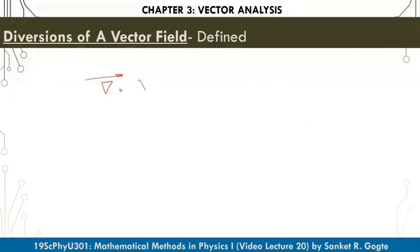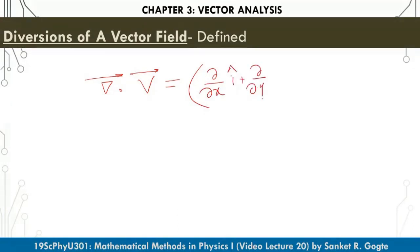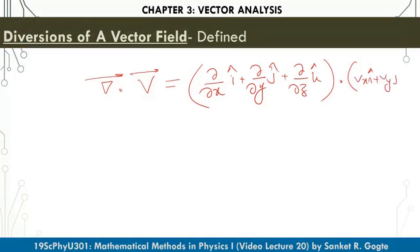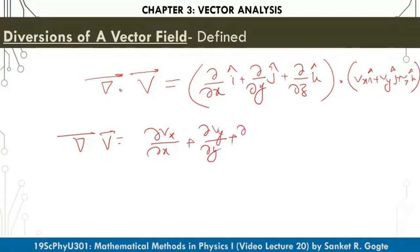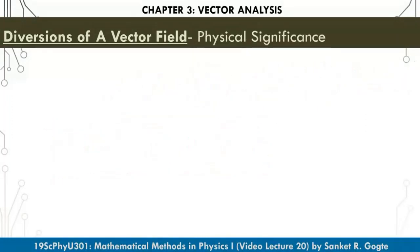Divergence of a vector field is calculated by the dot product of del with the vector field V: del dot V. Writing it out: (∂/∂x i + ∂/∂y j + ∂/∂z k) dot (V_x i + V_y j + V_z k), which gives del dot V = ∂V_x/∂x + ∂V_y/∂y + ∂V_z/∂z. This is how you mathematically calculate the divergence of a vector field.